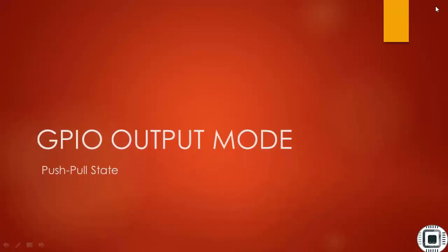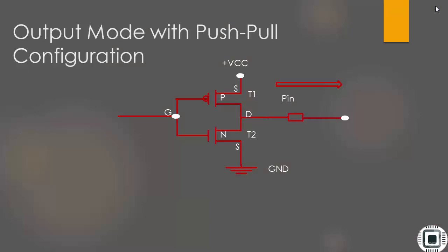GPIO output mode with push-pull state. Let's understand GPIO output mode with push-pull configuration. This is the default configuration of any GPIO pin when you configure the pin for output mode.